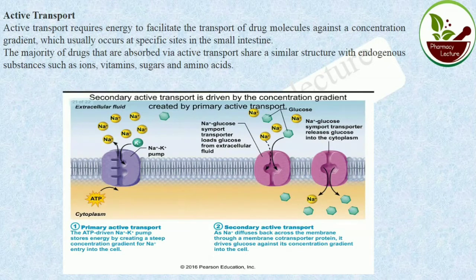Active transport requires energy to facilitate the transport of drug molecules against a concentration gradient, which is usually required at specific sites in the small intestine. The majority of drugs absorbed via active transport share a similar structure to endogenous substances like ions, vitamins, sugar, and amino acids. These water-soluble substances are processed through the active transport method, and energy is required.